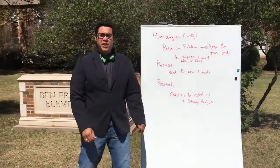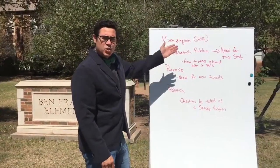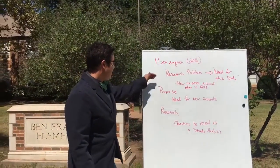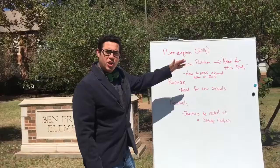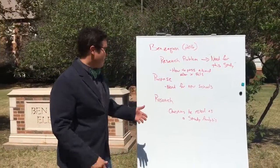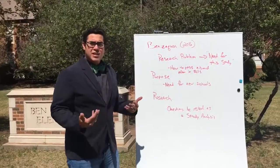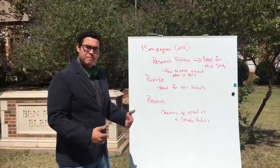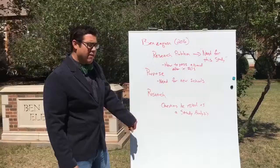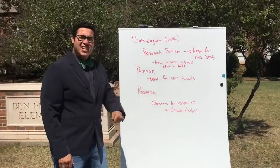Welcome to Ben Franklin Elementary — it was built in 1926. Now let's look at Benzaki. In 2016, in his dissertation, he did use the three major components. Instead of calling it a research problem, he called it the need for the study. He was trying to discuss how to pass a bond after it failed. The purpose was: there's a need for schools, so how do we do that, especially if you fail the first time? And his questions were very directive towards the study of an analysis.